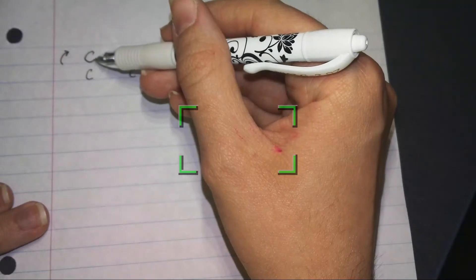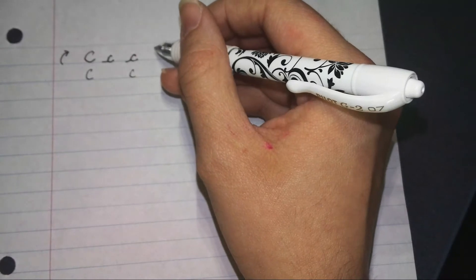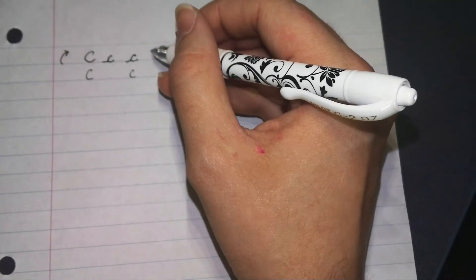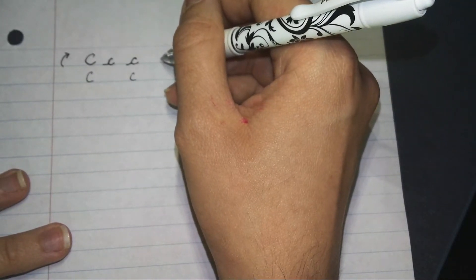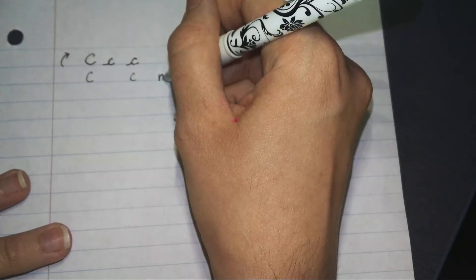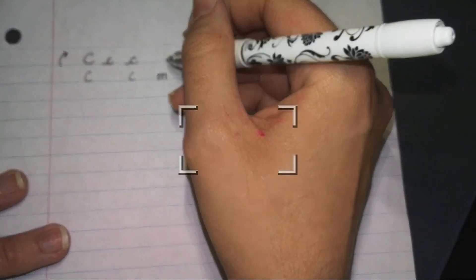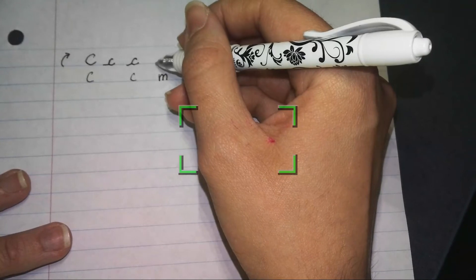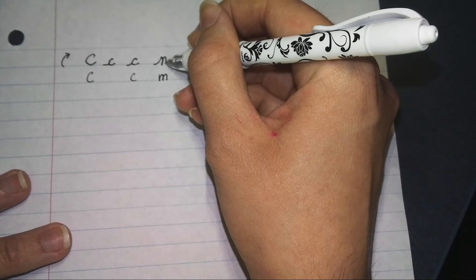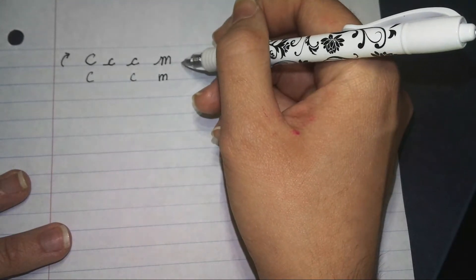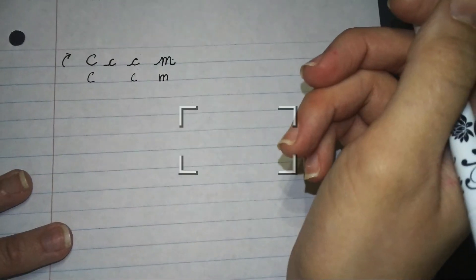Another letter that we are going to be doing here is M. A lowercase M is a little bit different than a print M because the print M you just go down and you have kind of the two bumps there. On a cursive M you have to come up off the letter before it, come down and then the two bumps. So you kind of end up with three bumps there because it's connecting to the letters before and after.